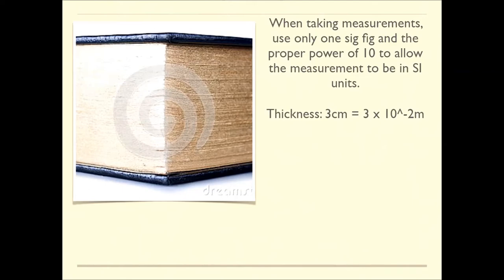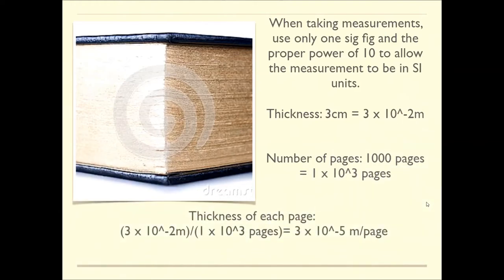Let's try it. Recall from my last lesson that we're only going to use one sig fig in all of our estimates and our final result. The proper power of 10 is what really matters here, not the digits themselves. We're going to make sure all our measurements are in SI units. This is a good example of a book about the same thickness as the textbook. I had my students measure this, and we got about 3 centimeters, approximately 3 centimeters. We converted that to meters, the SI unit for length, and that's 3 times 10 to the minus 2 meters.